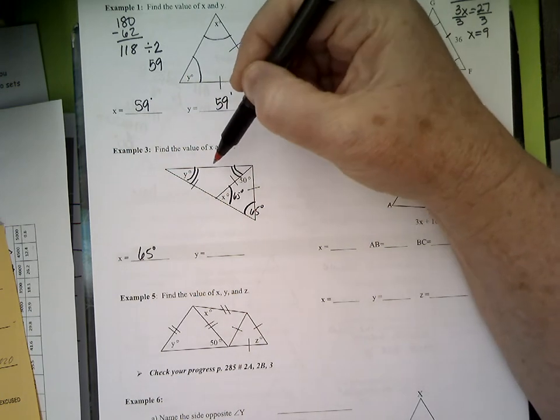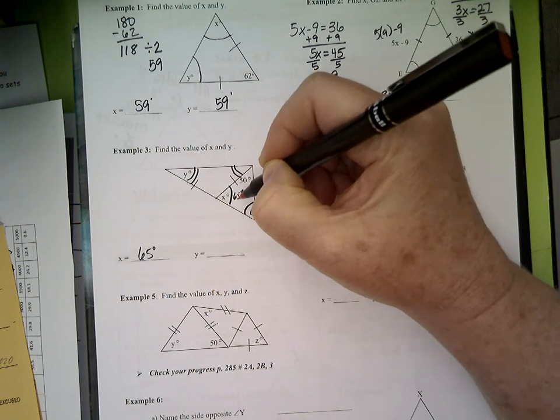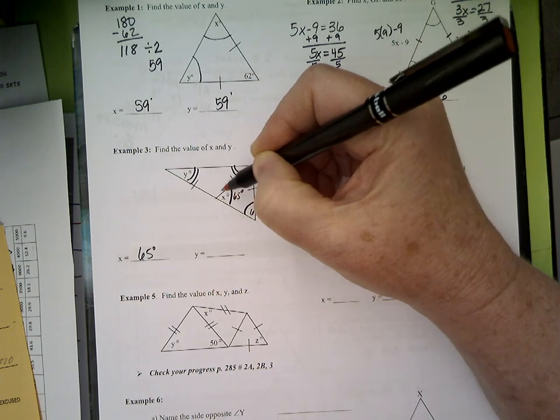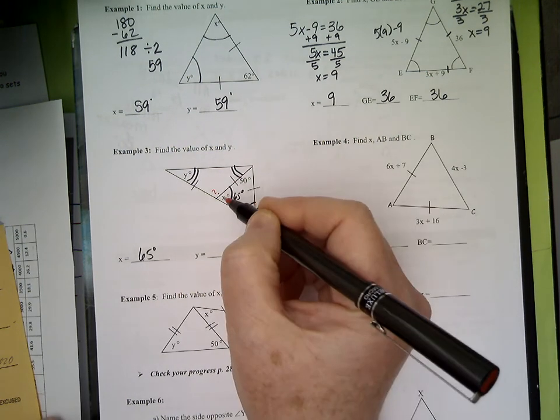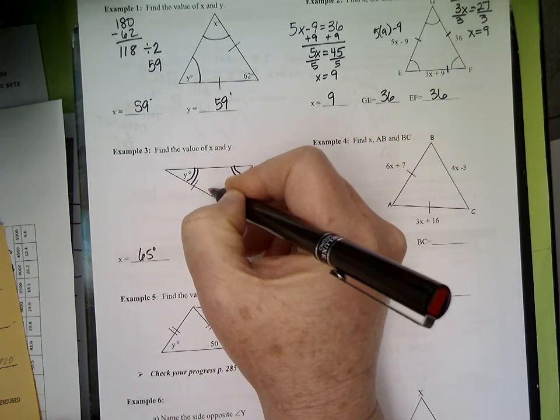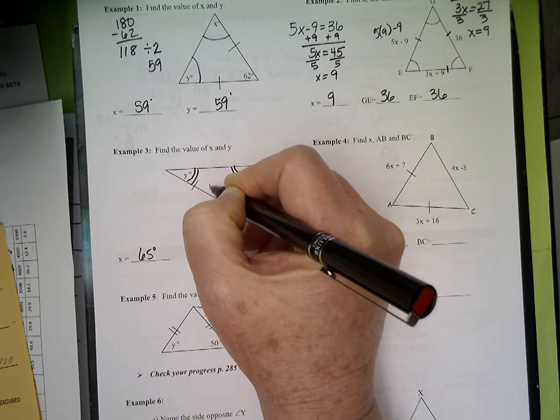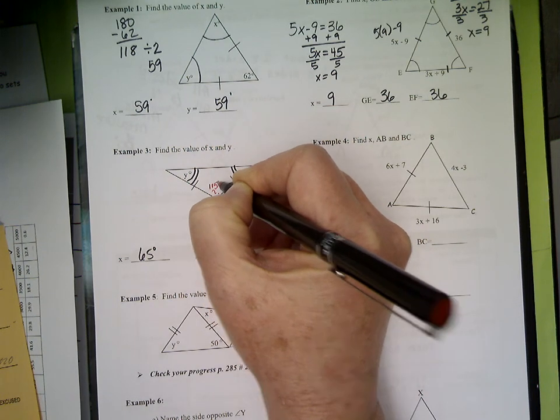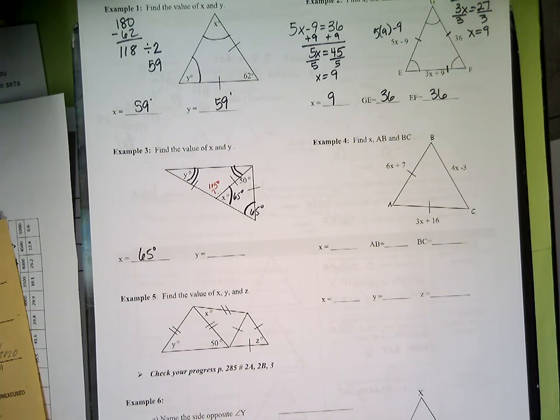I still don't know anything about this second triangle, but I know this little angle is 65. Wonder what that little question mark angle is. How come? This angle and this angle make a straight line, so this must be 115 degrees. How does that help me figure out y?